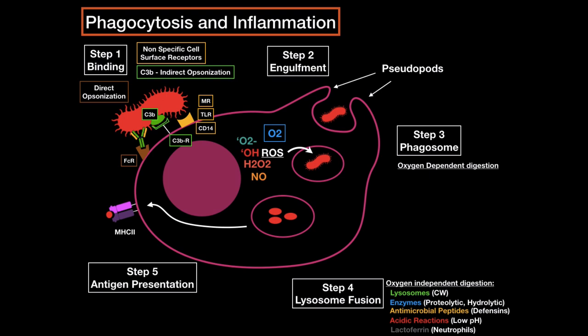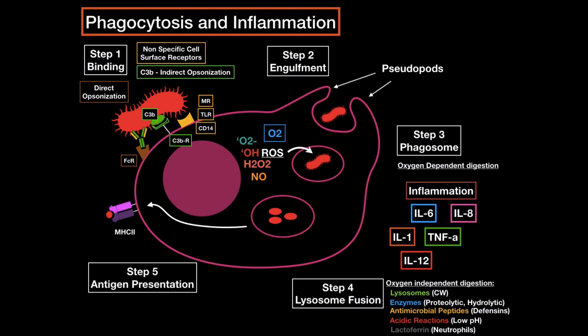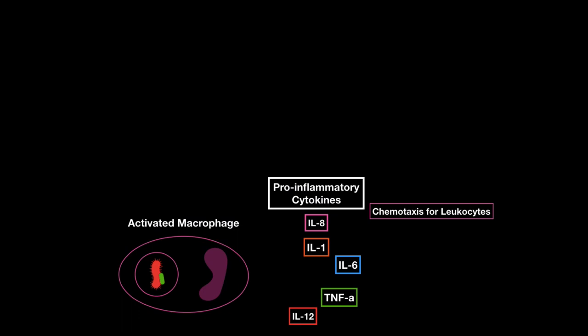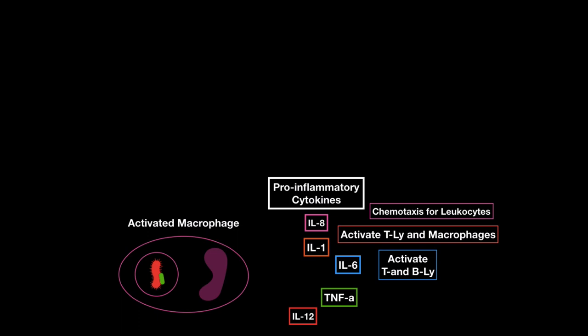These are the steps in phagocytosis, but one more thing also happens: inflammation. As the macrophage gets activated by binding its receptors to the microorganism, it releases inflammatory cytokines to include other cells in the battle. The pro-inflammatory cytokines released are: interleukin-8, which works as a chemotaxis and recruits other leukocytes; interleukin-1, which activates T lymphocytes and macrophages; interleukin-6, which activates T and B lymphocytes for adaptive immunity; tumor necrosis factor alpha, which can activate endothelium so that blood vessel walls express receptors to bind leukocytes and help them get into the area of infection. Activated endothelium can also release antimicrobial proteins like defensins to bind and opsonize the bacteria, and interleukin-12 will activate natural killer cells.